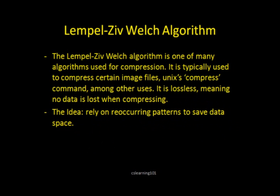In this video we are going to talk about the Lempel-Ziv-Welch algorithm, and it's just one of many different algorithms you could use to compress data. It is typically used in different applications to compress certain image files. It's also used in Unix's default compress command, and a few other areas. It is a lossless algorithm, meaning that when you compress the data, no data is lost. So you can recover all of the data back without losing anything. Some algorithms do lose information when you compress in favor of compressing even more, so you have to decide for yourself which is more important.